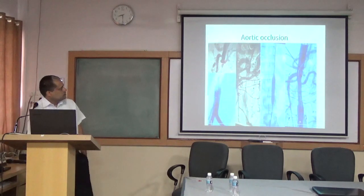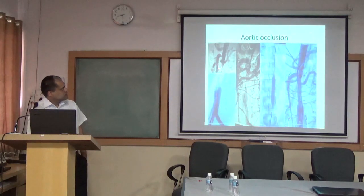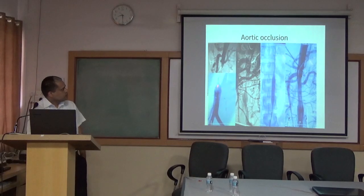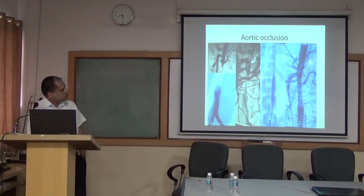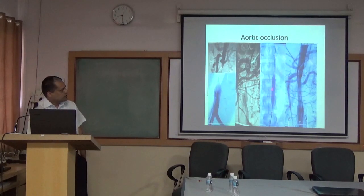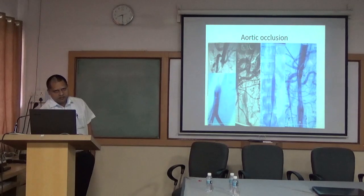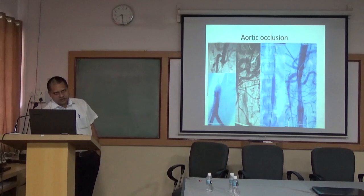Here is a case where the aorta just below the superior mesenteric artery is completely occluded and reforming below with collaterals. The patient was having very high blood pressure because of aortic occlusion. We passed a guide wire through the occlusion, inflated a balloon, and after balloon angioplasty the aorta was completely opened up. If it opens completely with balloon, there is no need to put a stent; if it is resistant to balloon, we put stents as well.